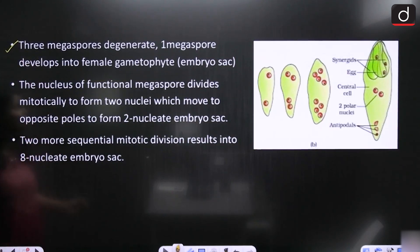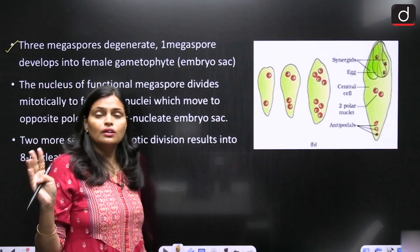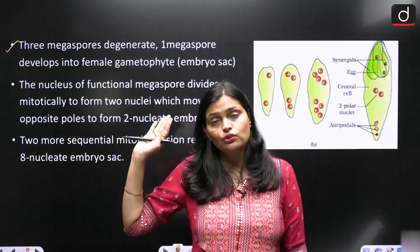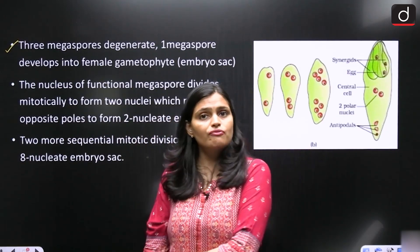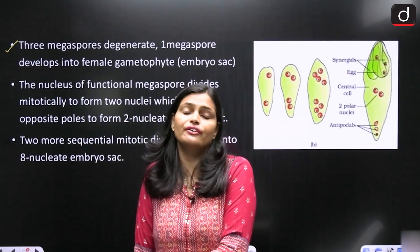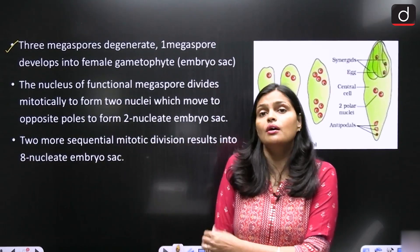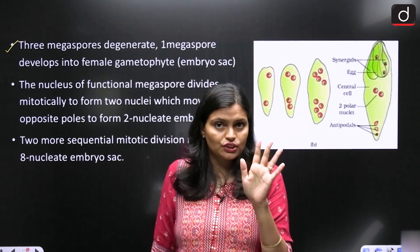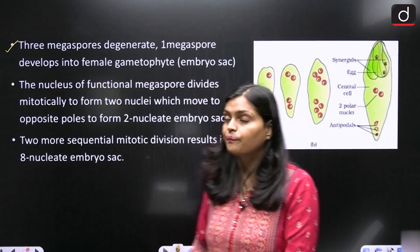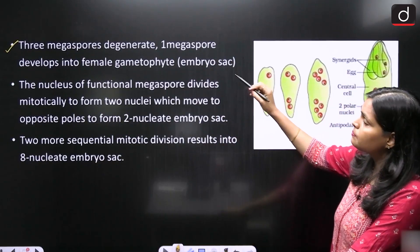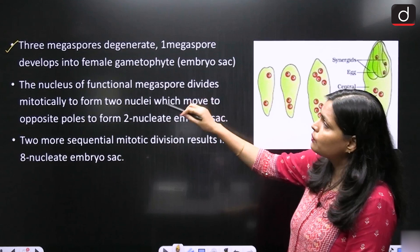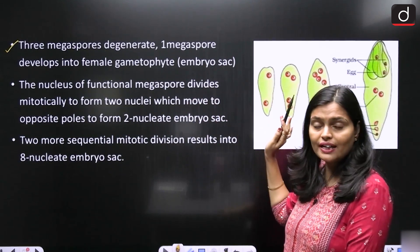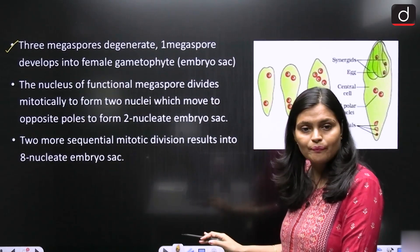Out of the 4 Megaspores formed, 3 degenerate. In Microsporogenesis, all 4 Microspores differentiate into pollen grains, but here 3 Megaspores degenerate, and only 1 functional Megaspore remains. This 1 functional Megaspore develops into the female gametophyte, called the embryo sac.